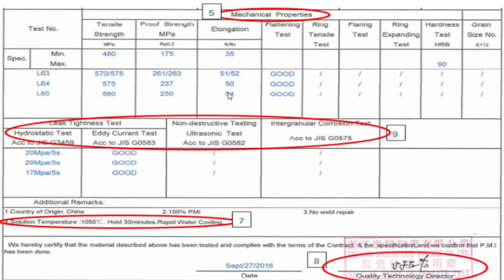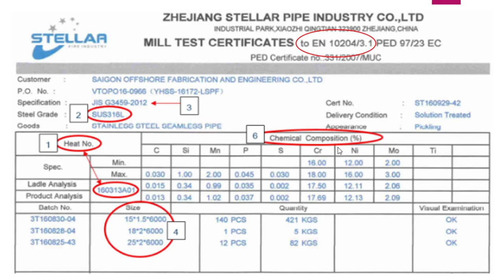Next is the chemical analysis. For this material the spec mentions minimum and maximum percentages for carbon, silicon, manganese, phosphorus, sulfur - all below the maximum value - and chromium, nickel, and molybdenum within their specified limits. For the ladle analysis, the test result is shown, and for the product analysis - testing after making the product - the result is also shown. For example, carbon spec value is 0.03, ladle analysis found 0.015, and product analysis found 0.013.